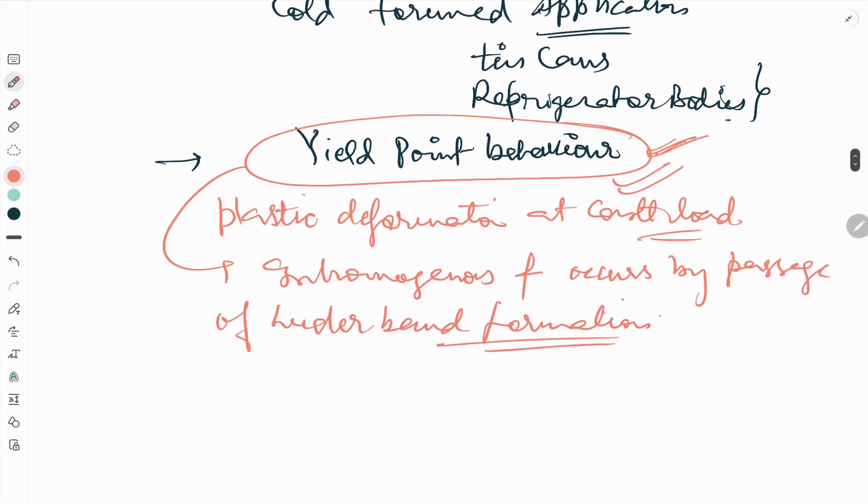Due to this Luder band formation, the consequences will be it will form a rough surface and give the orange peel effect.